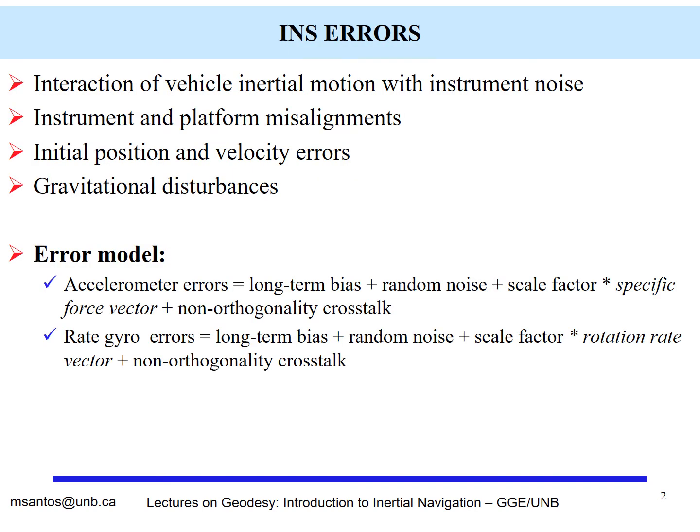The main source of errors of the inertial navigation system would be noise, interaction of vehicle inertial motion with instrument noise, misalignments of the instrument and the platform, initial position and velocity errors, as we have seen, we need to have initial estimates. And also gravitational disturbances in the sense that the value of g that we can use to subtract from the acceleration would be given by a model. The model may not be perfect.